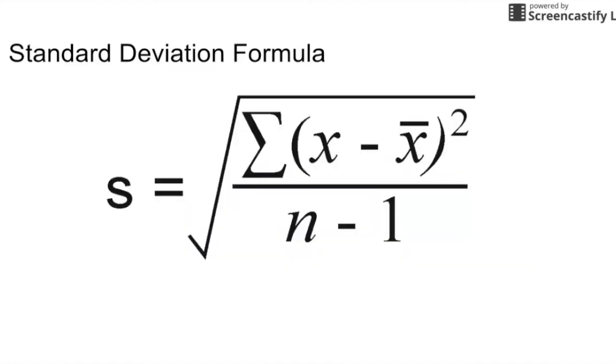Standard deviation is the typical or average distance data points are away from the mean. This value squared is the variance. A couple things to take note of are that standard deviation will never be 0, and that standard deviation is in the same units as the data set.